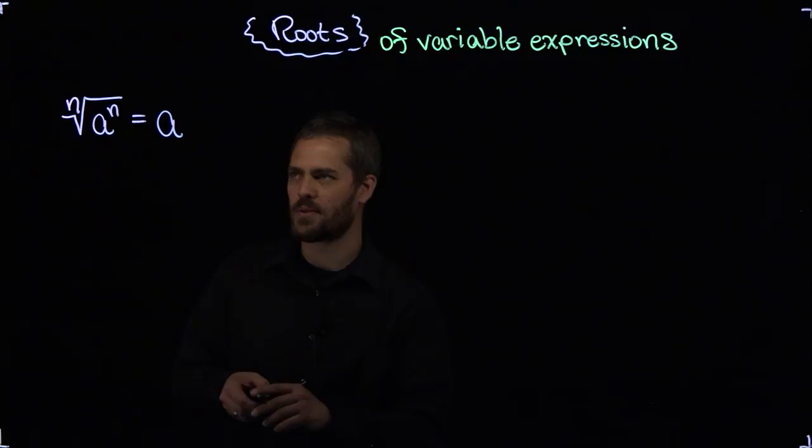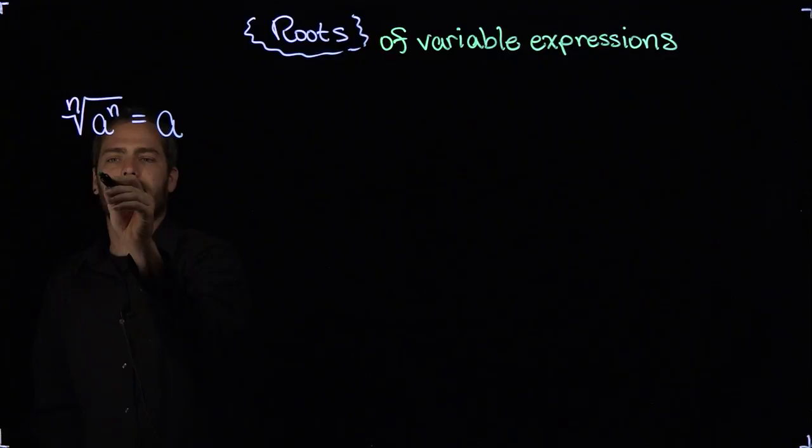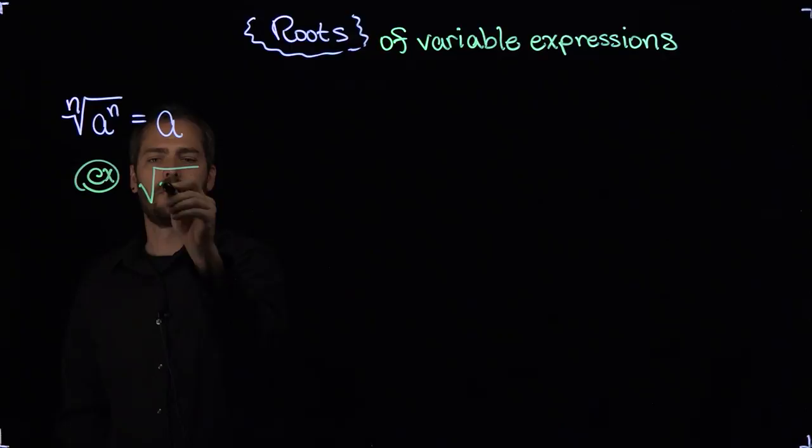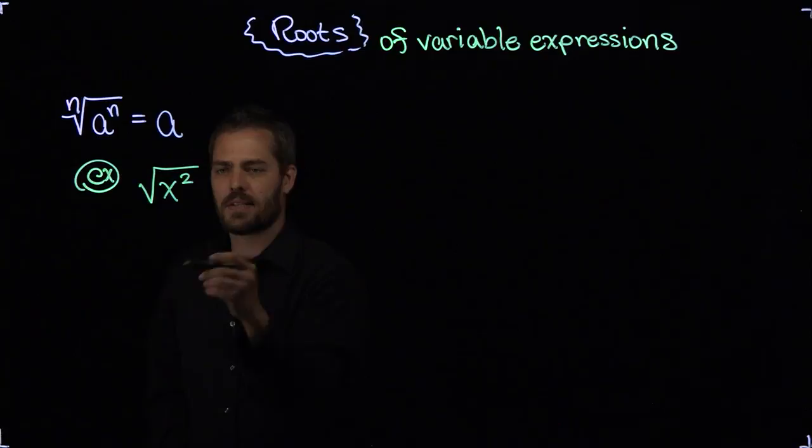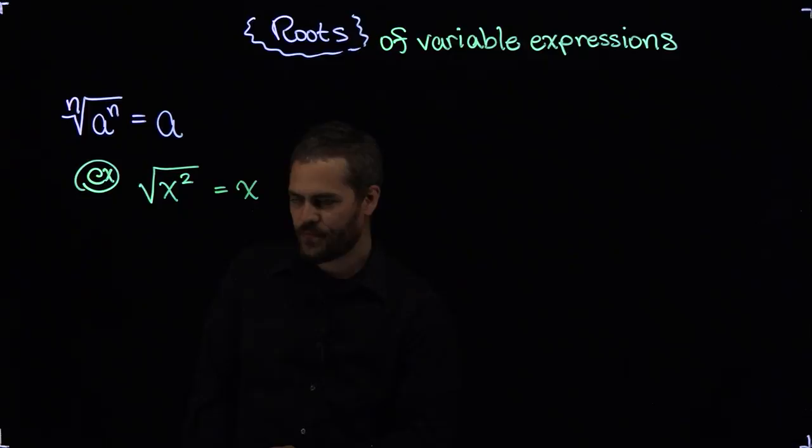But suppose we applied this idea to a variable. I mean we are here really in the definition, but we could say for example let's do the square root of x squared. Now remember that with square roots in particular we don't usually write the index here, the index of 2 for a square root. But according to this definition above, the square root of x squared must be x.